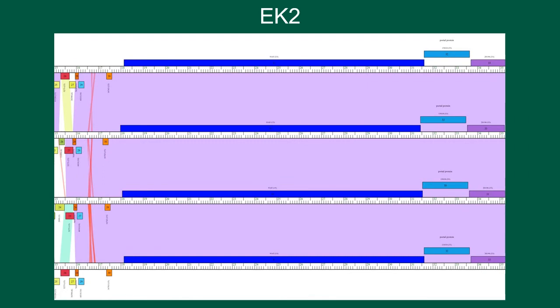The EK2 subcluster also has a very large gene located in the middle of its genome. Similarly, it has no known function, and it's about 13,000 nucleotides in length, so a very large gene. This gene is also only found in the EK2 subcluster, and it is also not known why it is important or what the function could be.